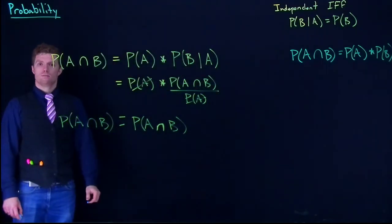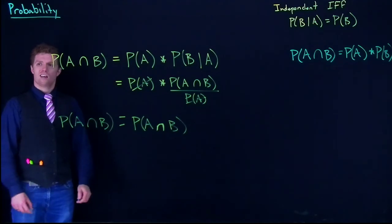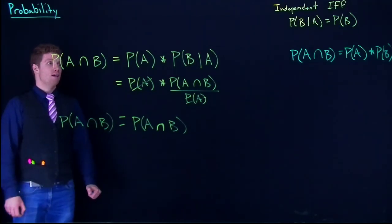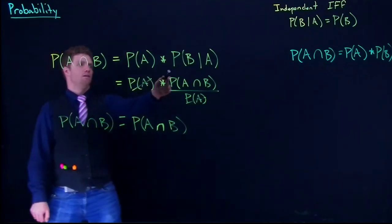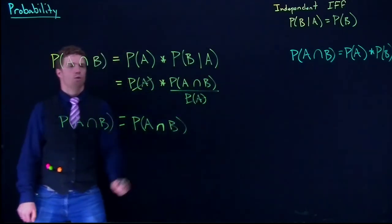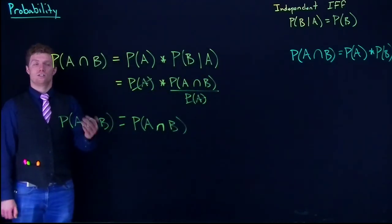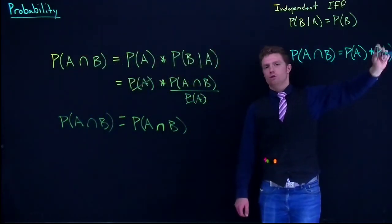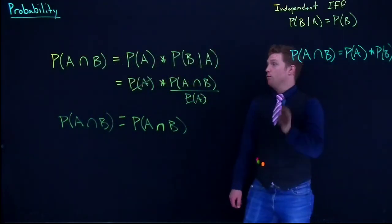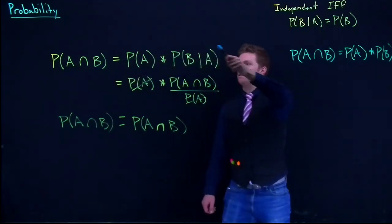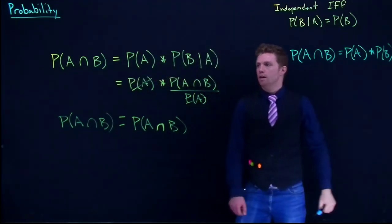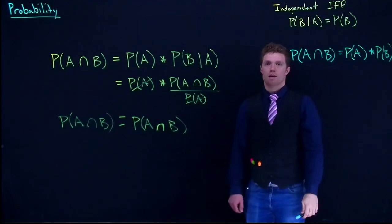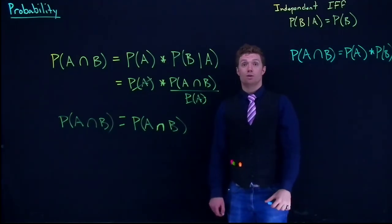dependent and independent events. The reason is because of how this works—it works for both. That conditional, if it's independent, drops to being just this B, and then we get this shortened version. If we've got dependent, it holds just like this. So that's how we do our general